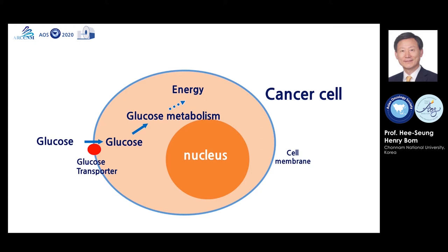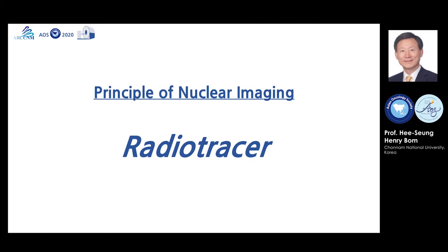Many cancer cells actively produce glucose transporters in the cell membrane to catch glucose and produce energy. We can detect cancer cells if we can trace glucose. Nuclear imaging uses a radiotracer or radioactive tracer to show movement of small molecules such as glucose in living cells. To make a radiotracer, we replace one or more atoms with a radionuclide and detect the radiation coming from the radionuclide. We call this detection process radiotracing. In other words, the principle of nuclear imaging is radiotracing.